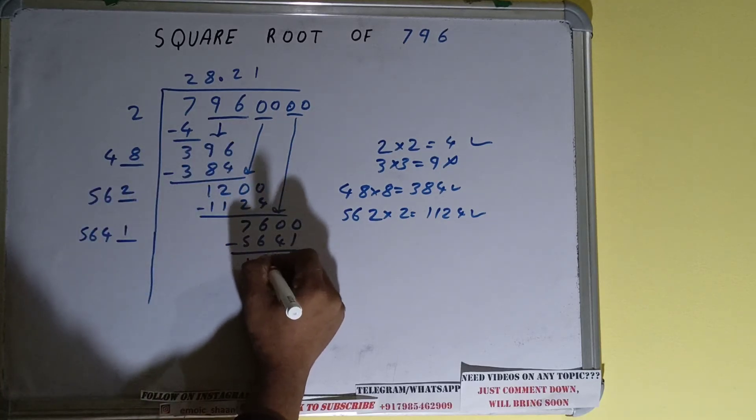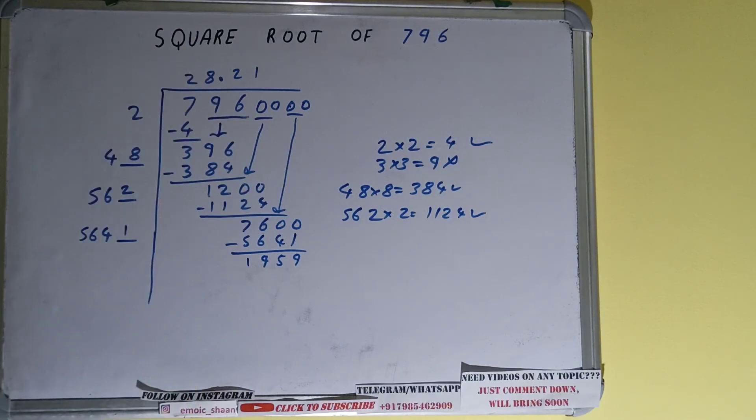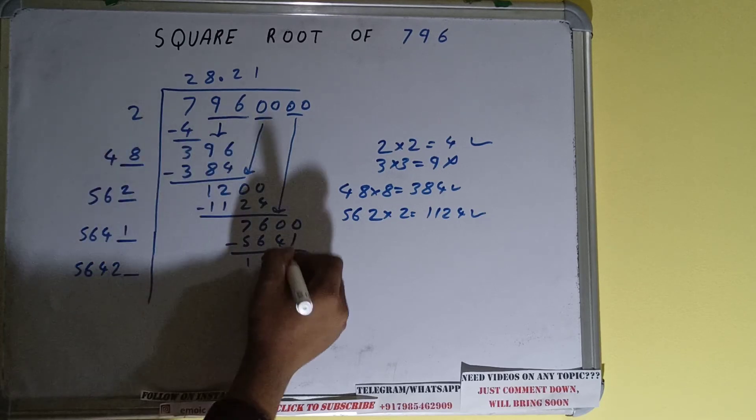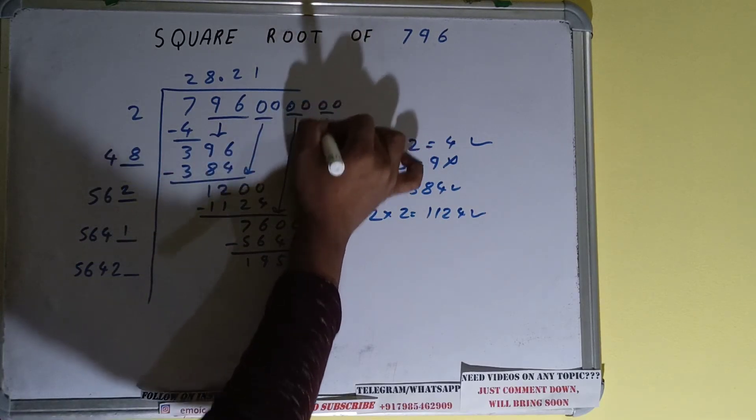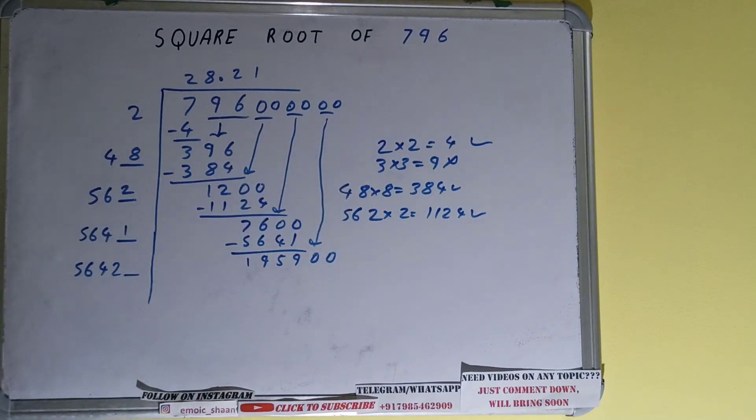And 1959 will be left. Now 5641 times 1, so add both. 5641 plus 1 will be 5642 and one digit extra. This number we need to make it big, so bring the next pair of zeros down and it will become 195900.